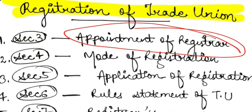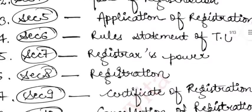Section 3 deals with the appointment of the registrar. The appropriate government appoints a person as the registrar of trade unions for each state. The appropriate government may also appoint additional and deputy registrars. The appropriate government will also prescribe their powers and functions.